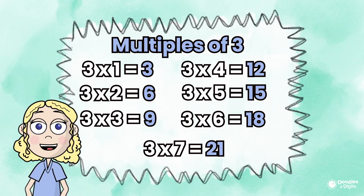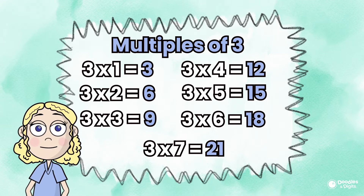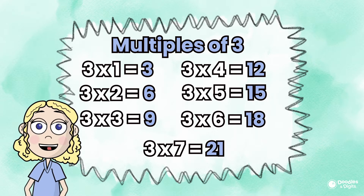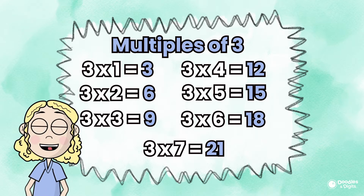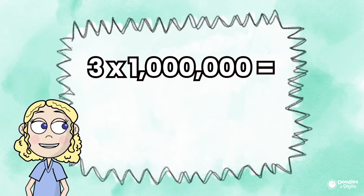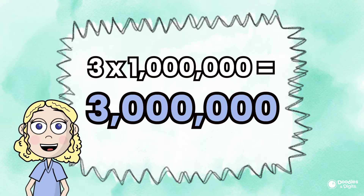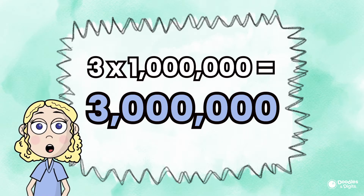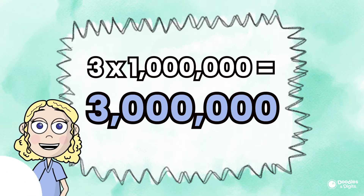Multiples can go on forever. For example, you can multiply 3 times 1 million and get 3 million. 3 million is a multiple of 3.